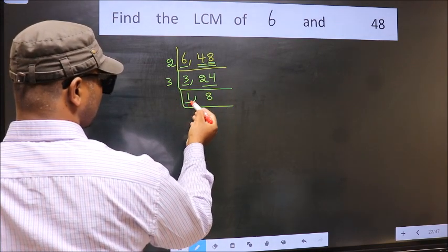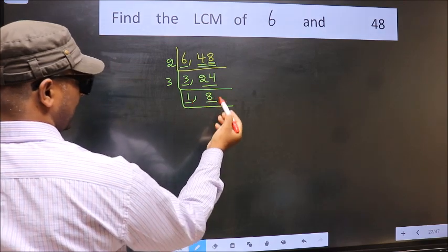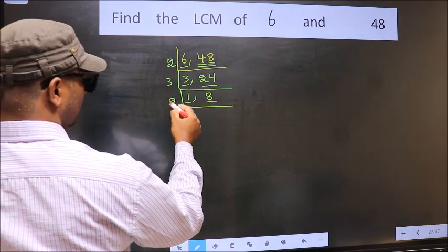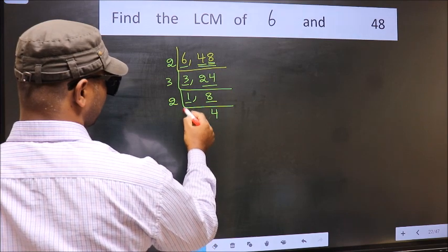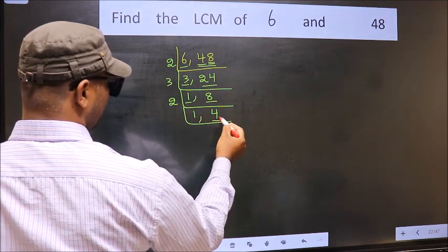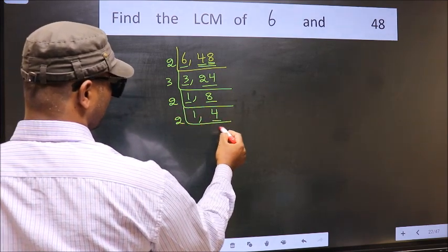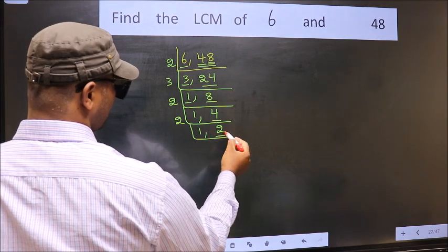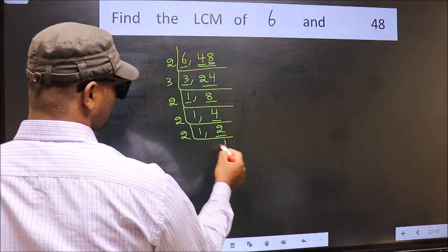Now we got 1 here, so focus on the other number 8. 8 is 2 times 4. Now we have 4, 4 is 2 times 2. Now we have 2, 2 is a prime number so 2 times 1 is 2.